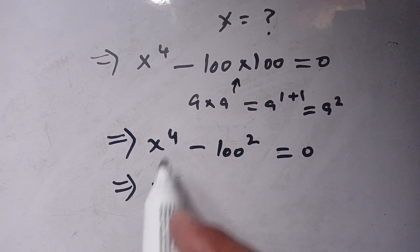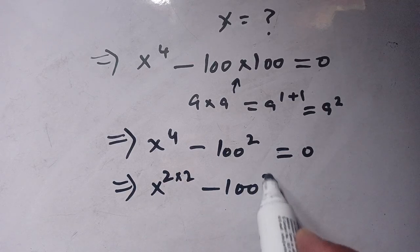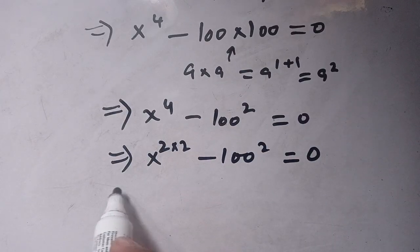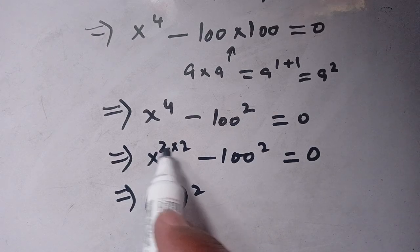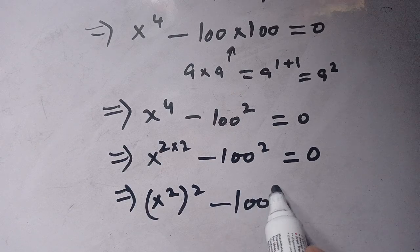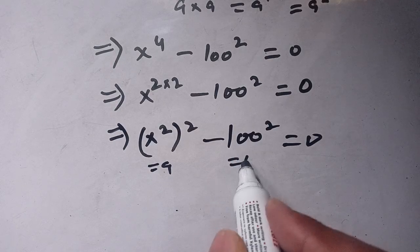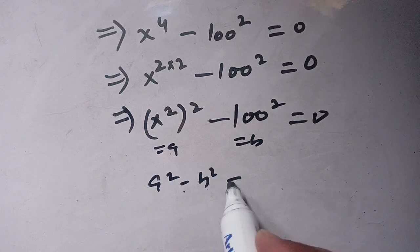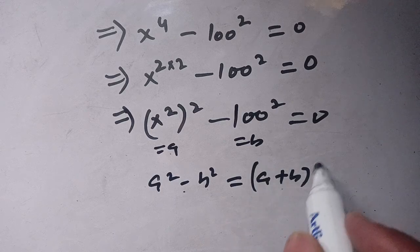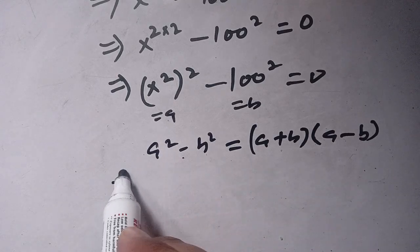Now, we note that 4 can be written as 2 times 2, so x to the power 4 becomes (x squared) squared. Using the identity a times a equals a squared, we recognize this is in the form a squared minus b squared, where a equals x squared and b equals 100.